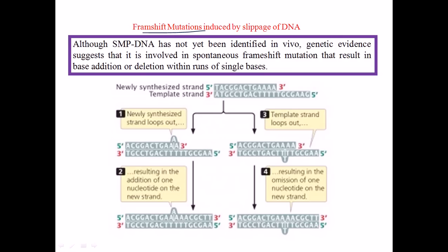Looking at the template strand from 5 prime to 3 prime and the newly synthesized strand: when there are stretches of G and A, one of the A's can get slipped out during the production of the new strand. This slipping can happen due to a fault during DNA replication — some problem in the arrangement of the beta clamps and polymerization machinery — causing part of the sequence to slip out and form a different DNA.